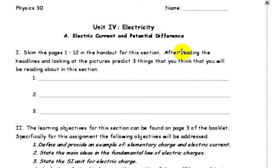Welcome back to Physics 30. This is the Unit 4 first booklet on electricity, Part A, Electric Current and Potential Difference. And it pertains to pages 1 to 12 of the Duotang.